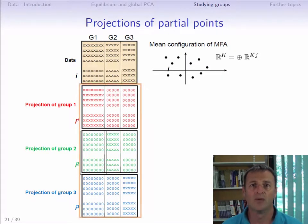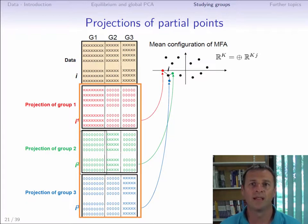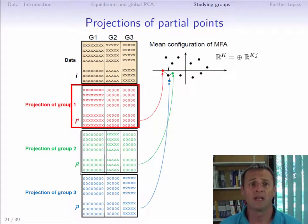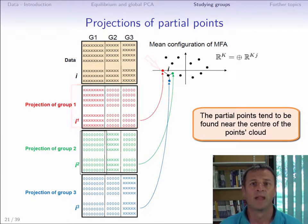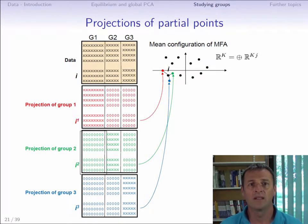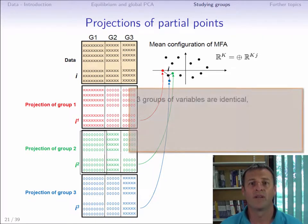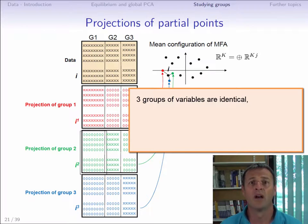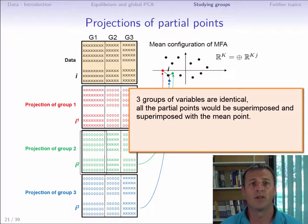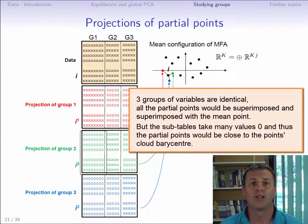These partial individuals are then used as supplementary individuals and projected onto the axes of the global analysis. We get the projection of the individual seen by the variables of group 1, shown here in red. An important point is that since we have zero for all groups other than group 1, the partial point of group 1 tends to be found near the center of the point cloud. To illustrate with a trivial example where the three groups of variables are identical: all partial points of the same individual should be superimposed on the average individual, but since the other groups take the value zero, the coordinates will be close to the barycenter — in fact three times too close.